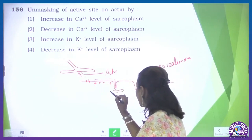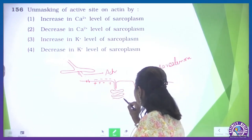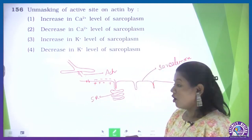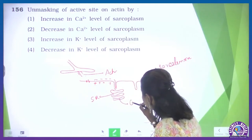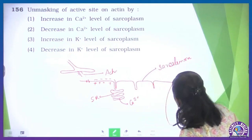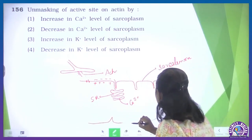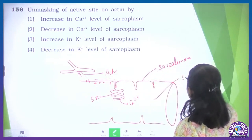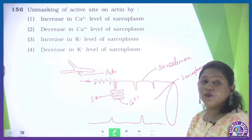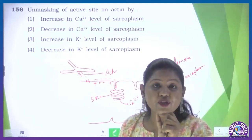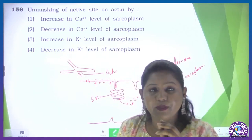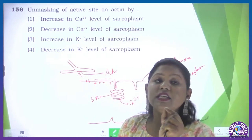What does the T-tubule stimulate? It stimulates the sarcoplasmic reticulum. And what does the sarcoplasmic reticulum release? Calcium ions — released into the sarcoplasm. When calcium ions increase sufficiently in the sarcoplasm, they go and join the troponin-tropomyosin complex, particularly a subunit that we call TPC.